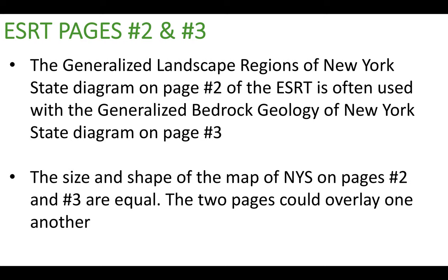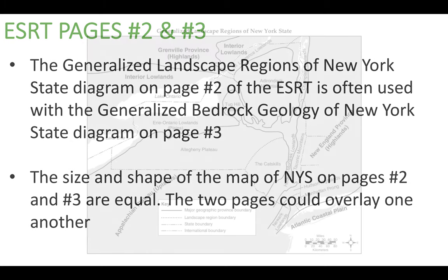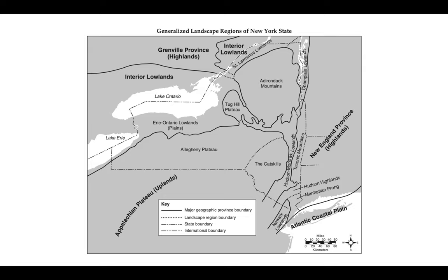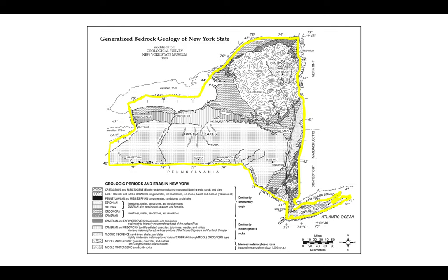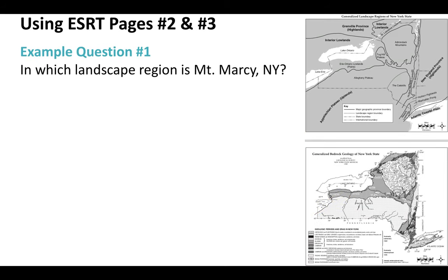Now I want to show you how to use pages two and three of the reference table together to answer questions about landscape regions. Pages two and three go hand in hand — the size and shape of the New York State map on both pages are actually identical. If we were to overlay one page onto the other, the New York State map would match up completely. Page two shows the same exact border, size, and shape as page three.